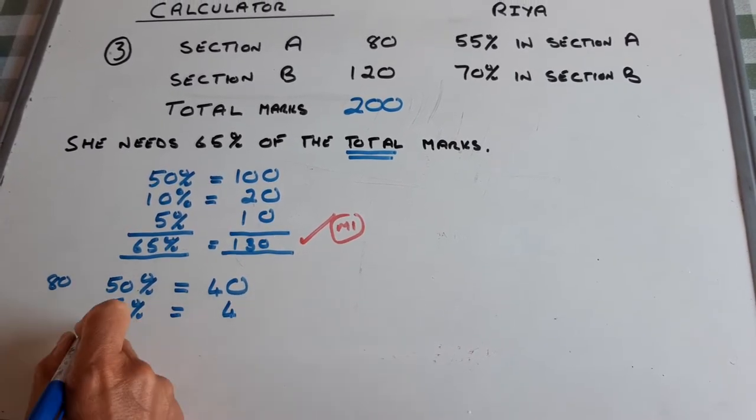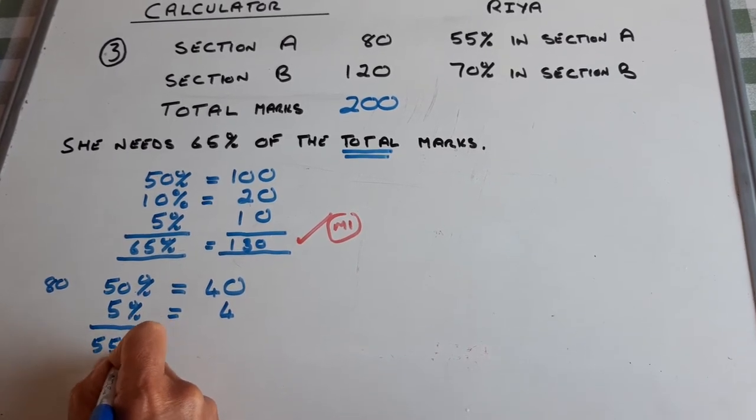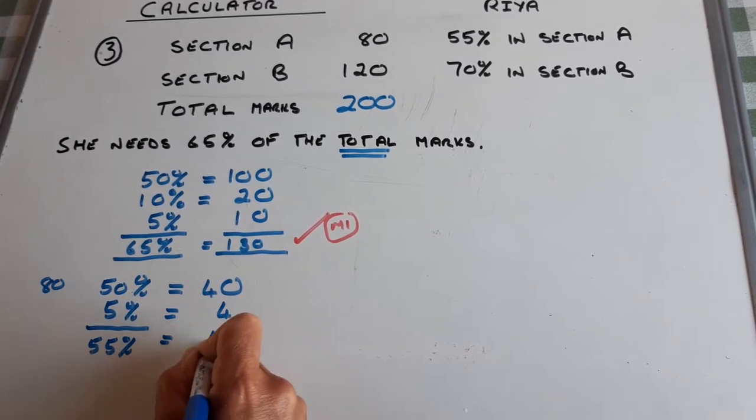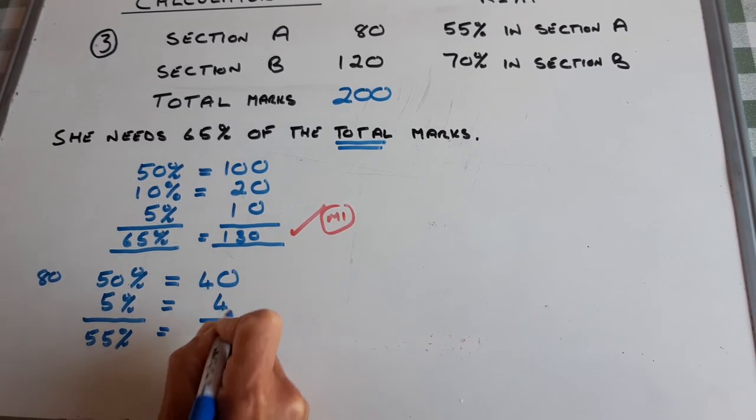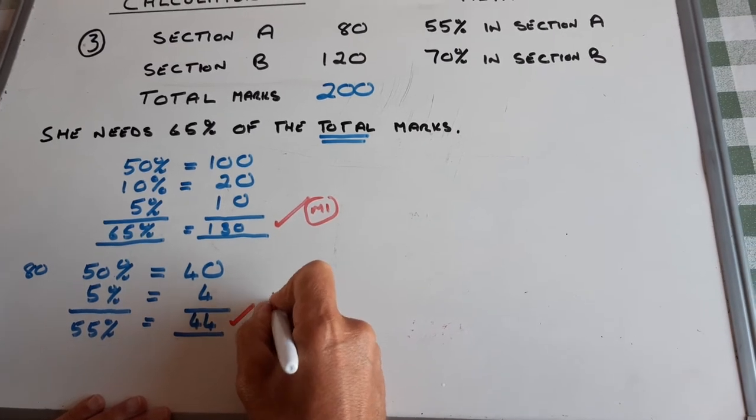4 marks. 55% is 44 marks. And I'm giving myself the second method mark there.